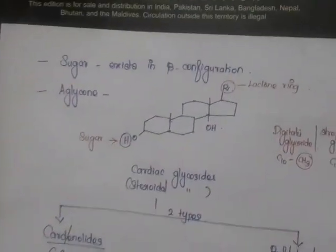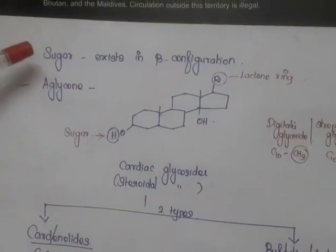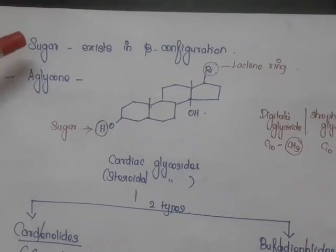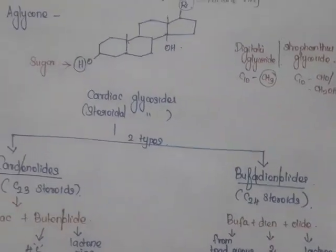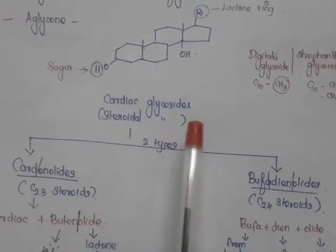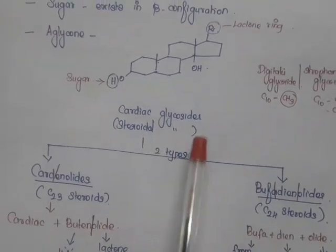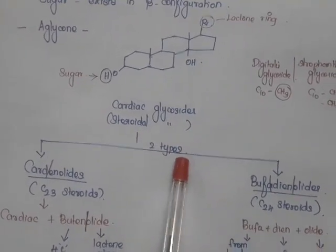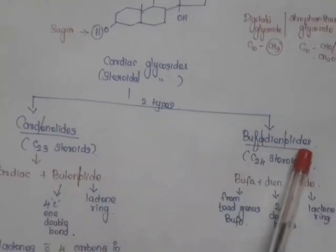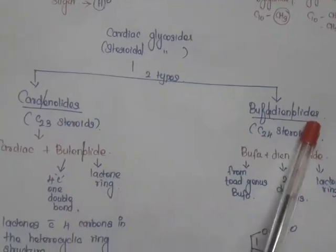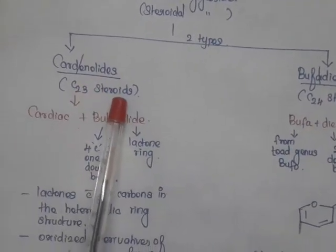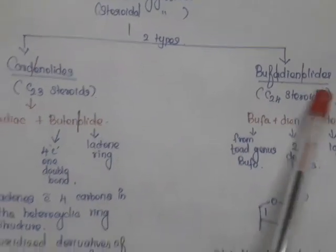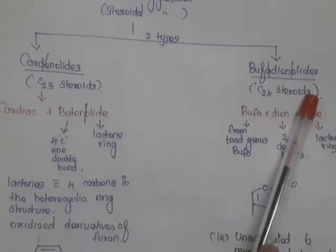The sugar present in the cardioglycoside exists in beta configuration. Cardiac glycosides are otherwise called steroidal glycosides and are of two types: one is cardinolide, another one is called bufodienolide. Cardinolides are otherwise called C23 steroids and bufodienolides are otherwise called C24 steroids.